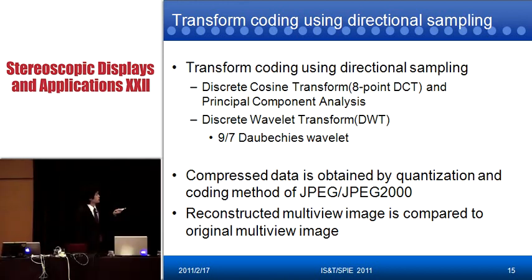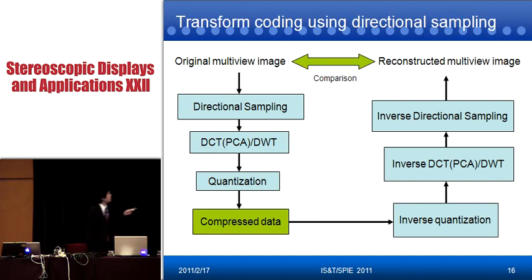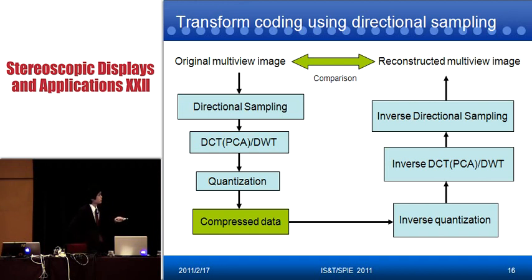By using this transform coding, we obtain the coefficients. The compressed data is obtained by the coding method of JPEG or JPEG-2000. The reconstructed multi-view image is compared to the original multi-view image. This is an overview of our algorithm. First, we implement directional sampling on the original multi-view image. After that, transform coding such as DCT, PCA, or DWT is implemented, followed by quantization, and finally we obtain the compressed data. On the receiver side, the inverse technique is implemented to obtain the reconstructed multi-view image, and we compute subjective and objective evaluation.